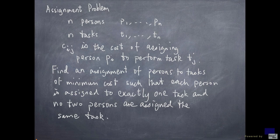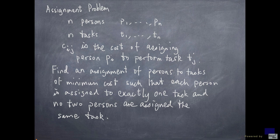We are going to look at a classic problem called the assignment problem. The problem is as follows. You are given n persons, say p1 up to pn, n tasks, say t1 up to tn, and the cost of assigning person pi to perform task j is given by cij.